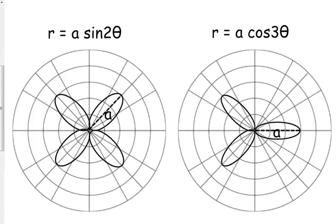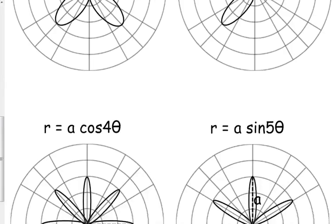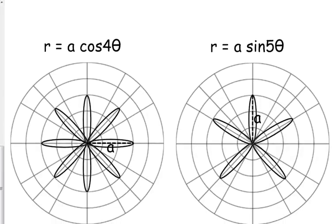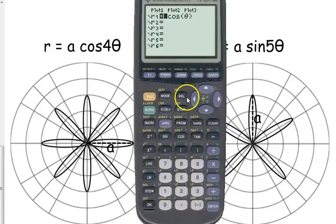Again, if it's with sine, it's going to be symmetric about the y-axis. And if it's with cosine, it's going to be symmetric about the x-axis. Now, depending on whether a is positive or negative, it could kind of change the orientation there. But here are just a few examples. Obviously, the bigger your n, the more petals you have. And a is the length of the petal.